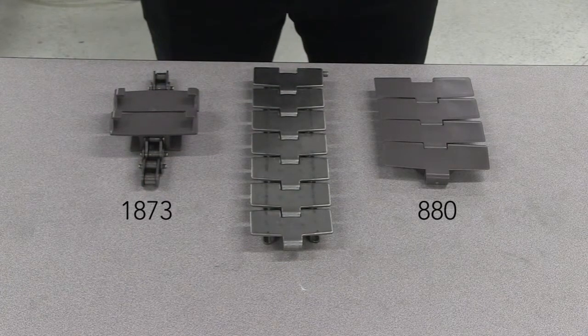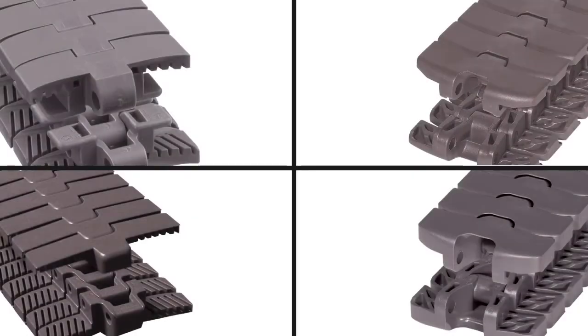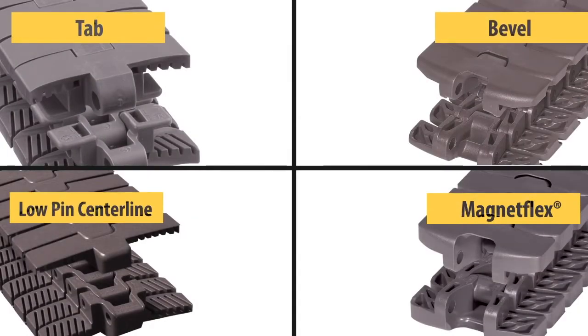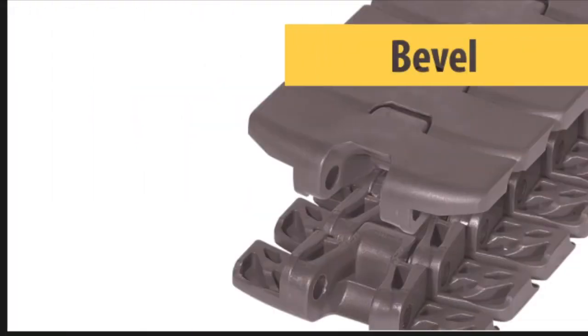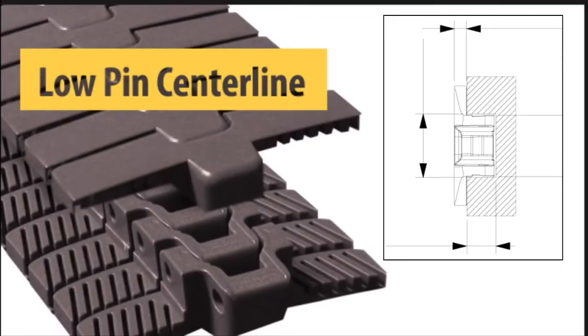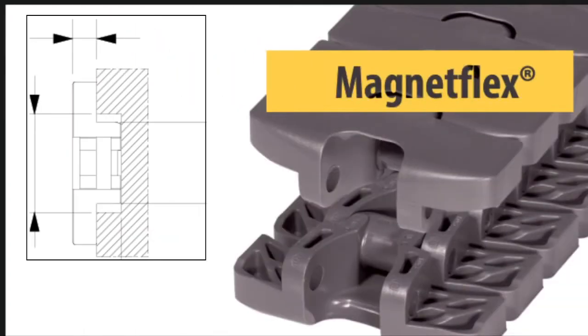we have an 1873 and an 880 chain. With tabletop side flexing chains, we must also identify the type of hold down method, which can be one of the following: tab, bevel, low pin centerline, and magnet flex.